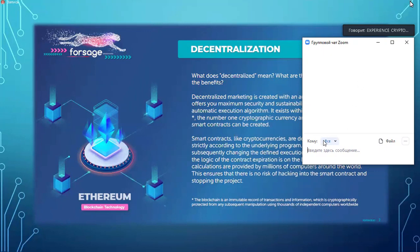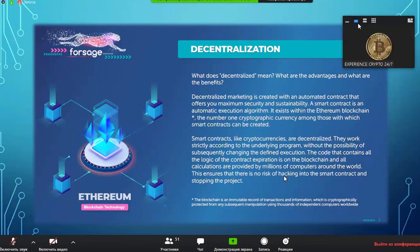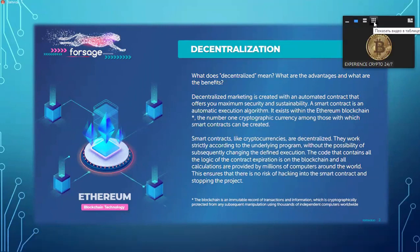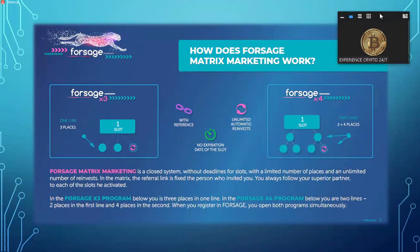This ensures that there is no risk of the smart contract being hacked and stopping our Forsage project. Let's move on — how does Forsage matrix marketing work? Keep in mind that when you are coming into this project you are going to be entering into an active side and a passive side.